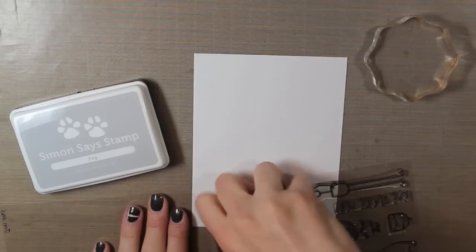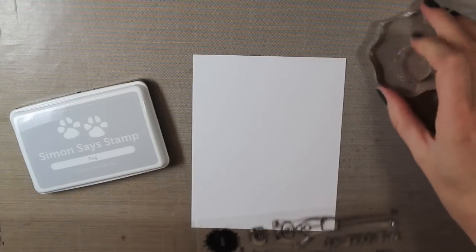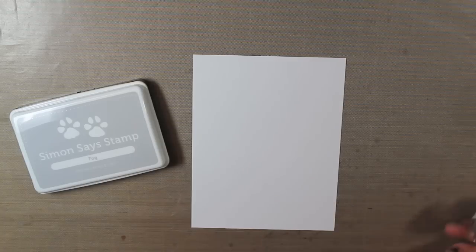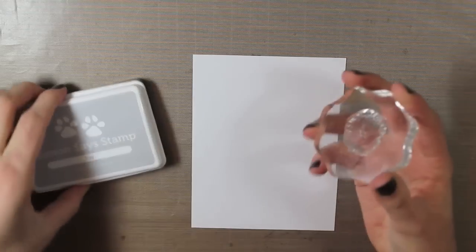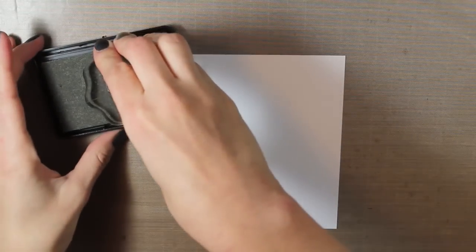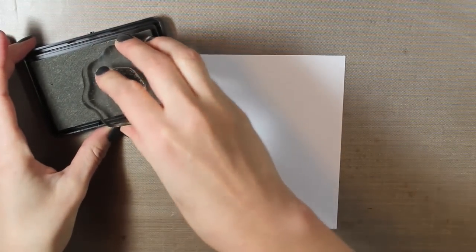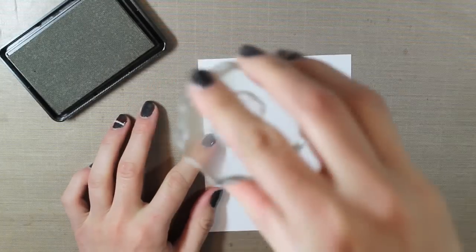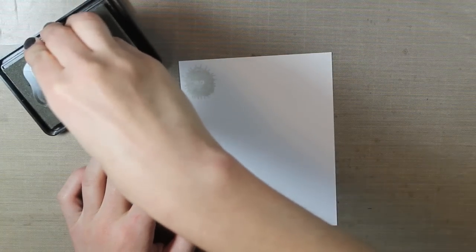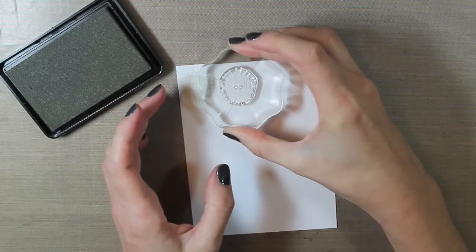Today I'm using an Alleyway Stamps stamp set and I have a piece of white card stock. I just chose this kind of blob image. It has little eyes so it's kind of like a fuzzy monster. I'm just going to stamp this on my background with the Simon Says Stamp Fog Ink. So I'm just creating my own kind of pattern paper in my background.